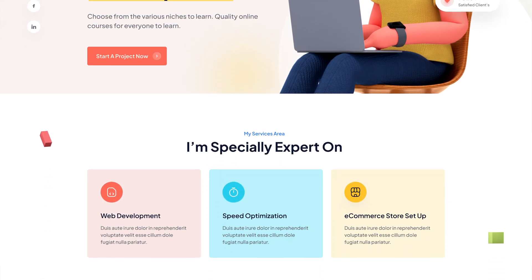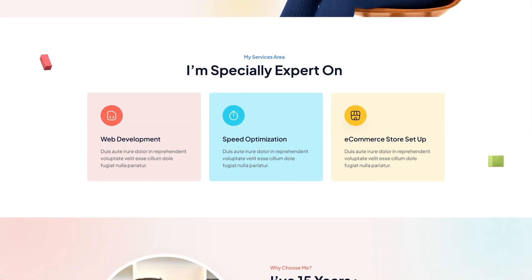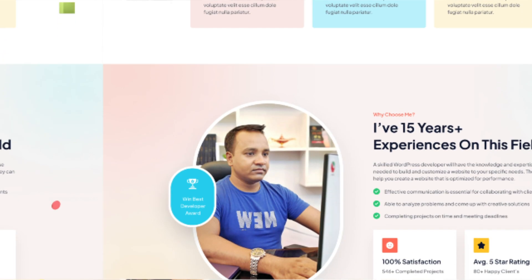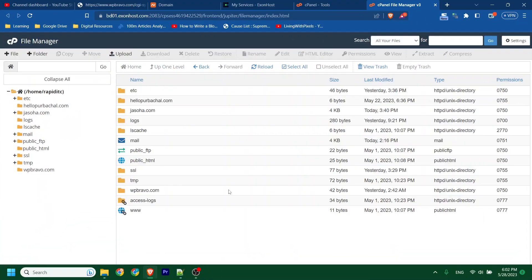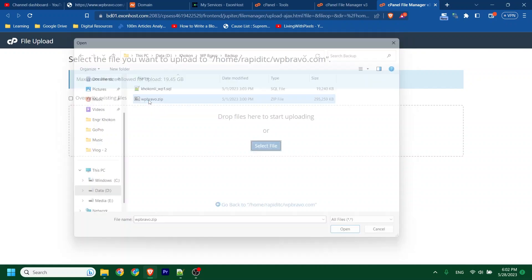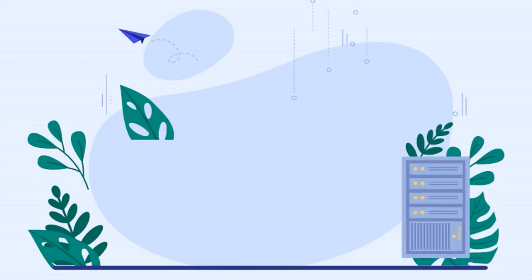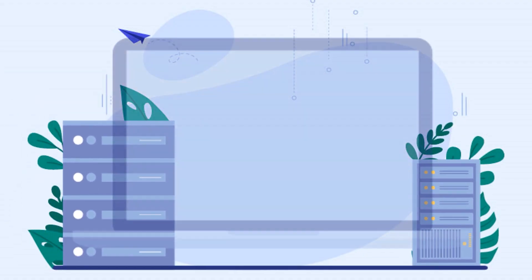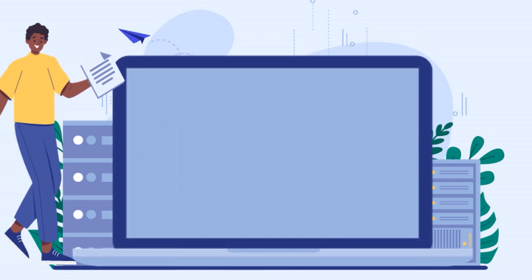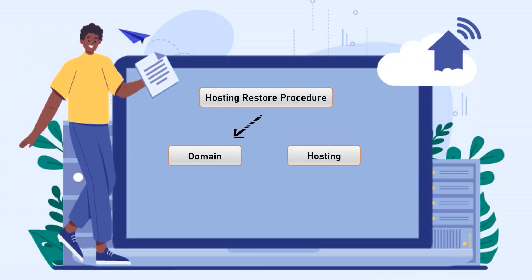Hello my dear friends and lovely viewers, hope you are all doing very well. Today in this video tutorial I'm going to show you how to restore a WordPress website from an old backup. First of all, let's see a quick overview of our working procedure. To restore a backup, I need a domain and hosting — I will connect the domain to hosting, then upload files and database, and finally connect the database to the files.